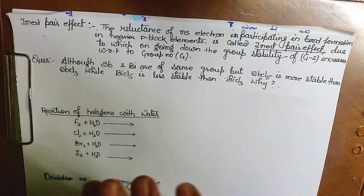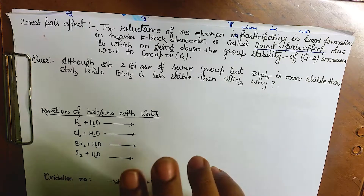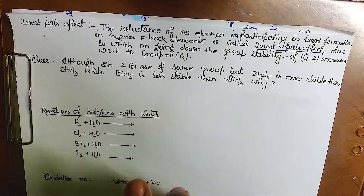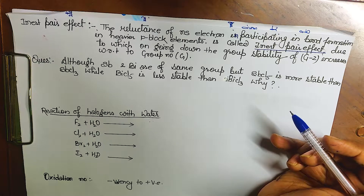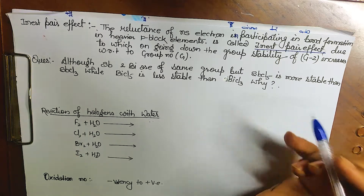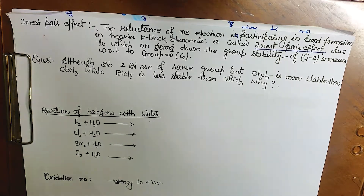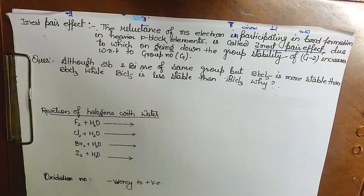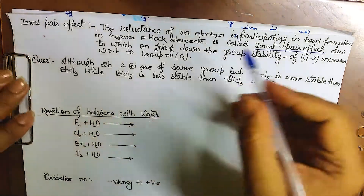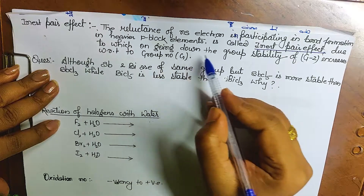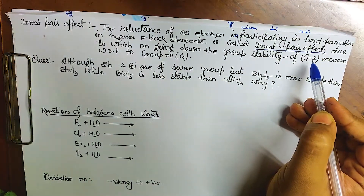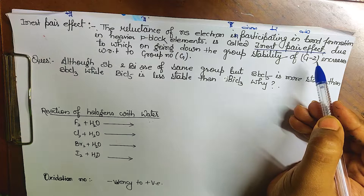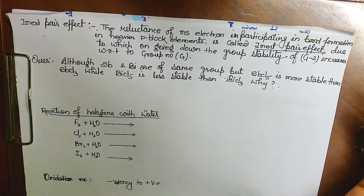Due to the Inert Pair Effect, elements show two types of oxidation states. For example, nitrogen shows both +3 and +5. As we go down the group, the stability of the lower oxidation state (group number minus 2) increases compared to the higher one.